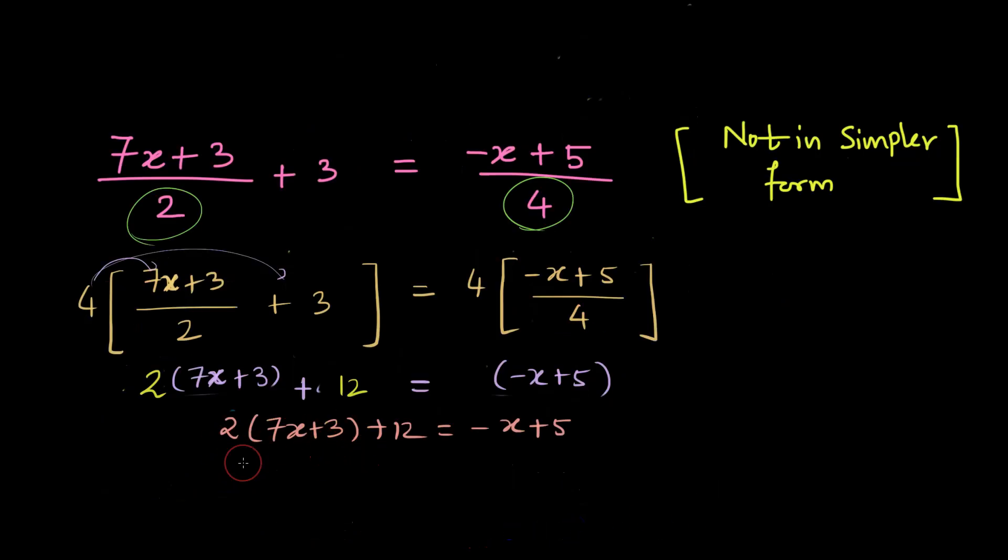So let us solve this bracket. If we solve the bracket on the left hand side we multiply 2 with the 7x and we also multiply 2 with the 3. So 2 times 7 is 14x and 2 times 3 is 6.